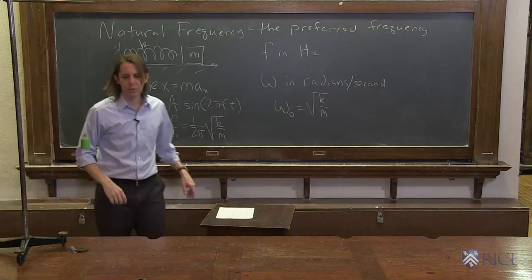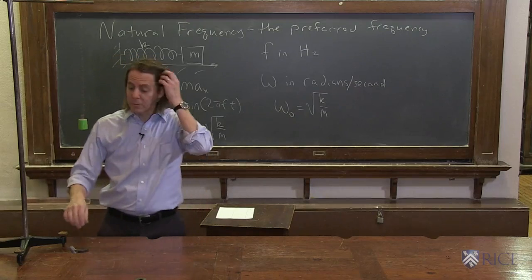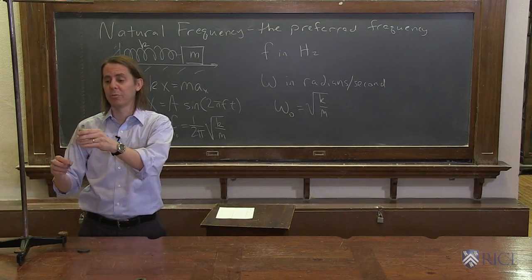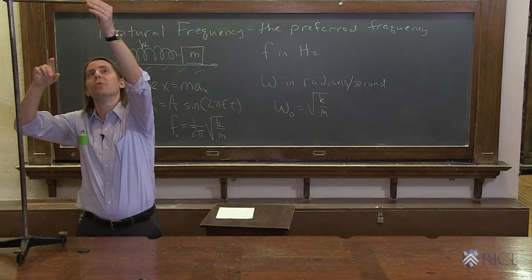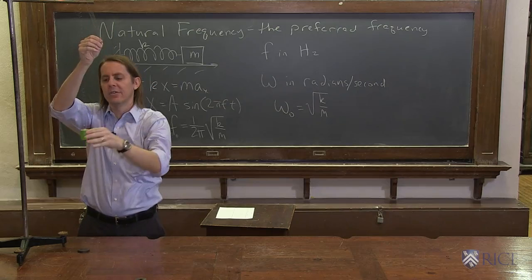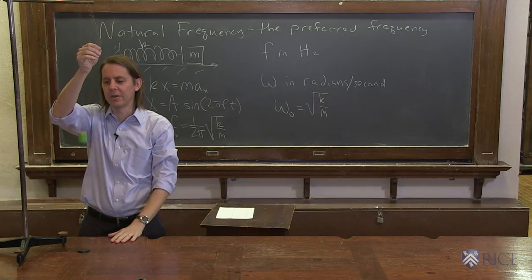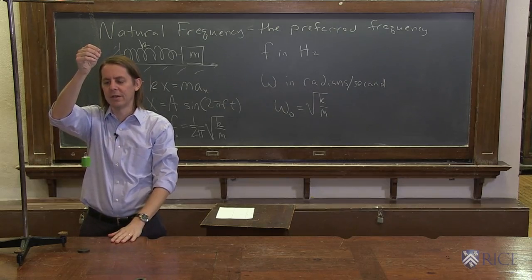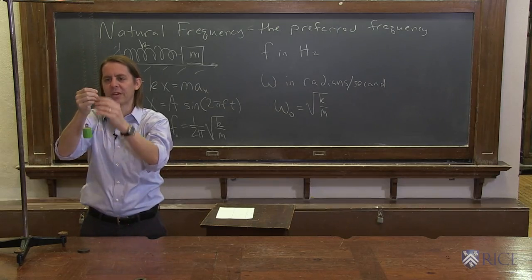And now we can kind of prove this to you. We can vary both k and m. So here I have one spring controlling the motion of the mass. And here I'll add an identical spring. So get a feel for how fast that's going, kind of up and down, nice, a little bit less than a second for the period.